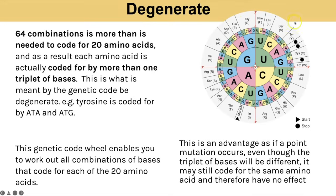For example, glycine can be coded for by GGG, GGA, GGC, and GGU — all four of those triplets of bases code for glycine. This is an advantage of the genetic code because if there is a mutation and one of the bases in a triplet is changed, you might still have the new triplet coding for the same amino acid, and therefore it has no effect on the overall polypeptide chain.